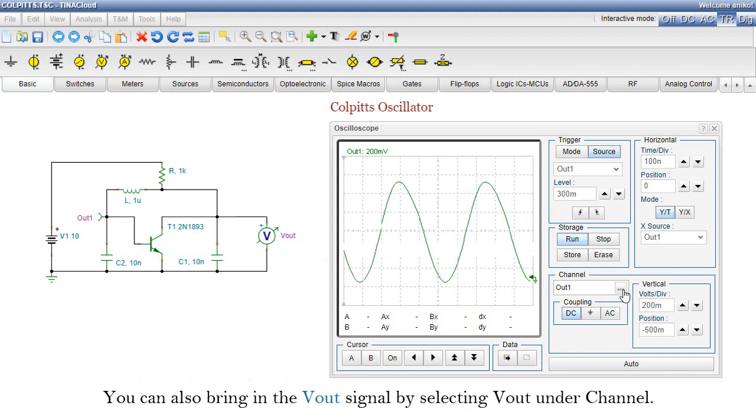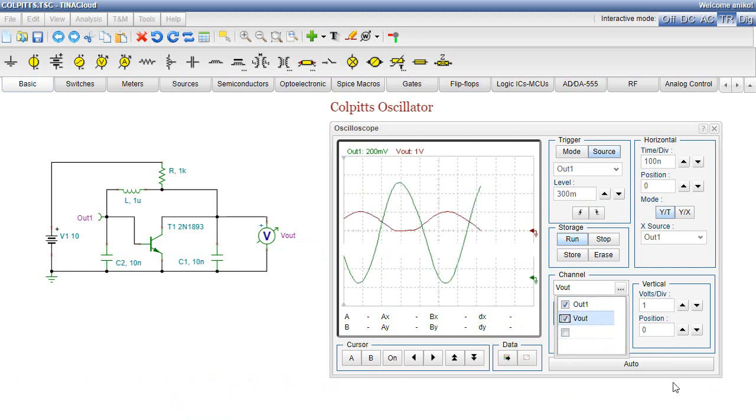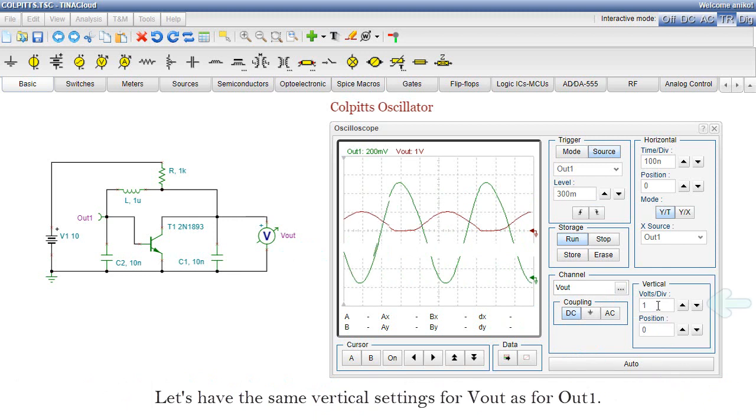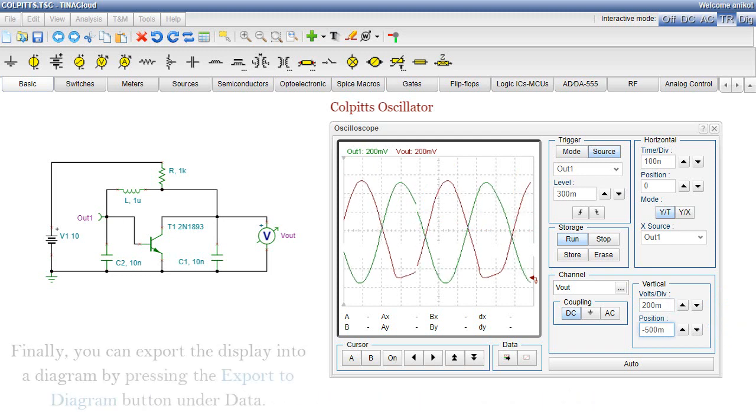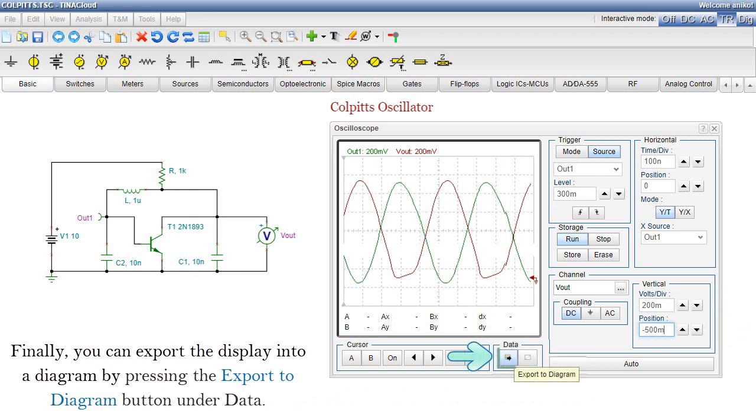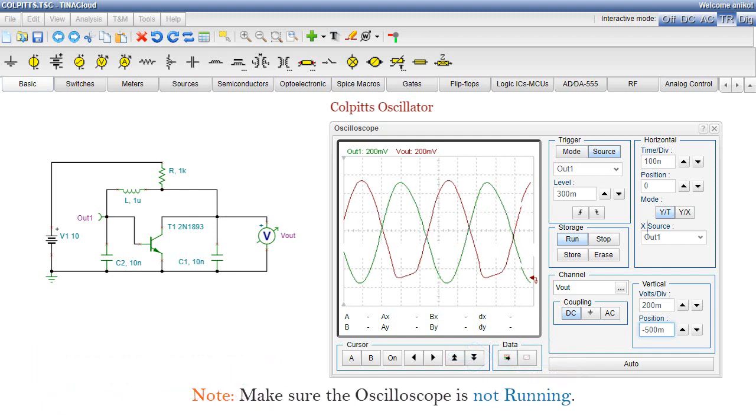You can also bring in the Vout signal by selecting Vout under Channel. Let's have the same vertical settings for Vout as for Out1. Finally, you can export the display into a diagram by pressing the Export to Diagram button under Data. Note, make sure the oscilloscope is not running.